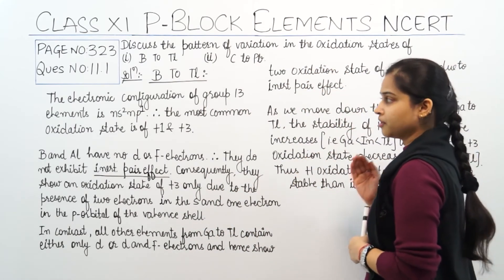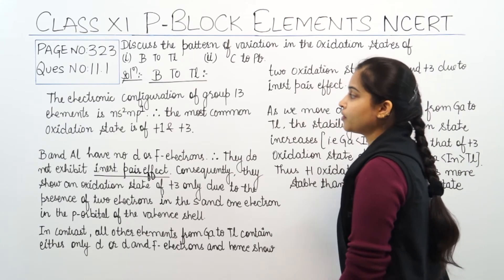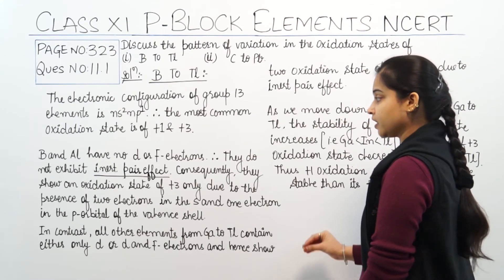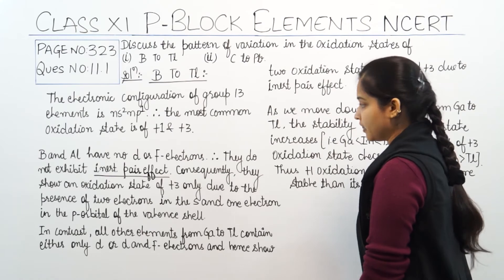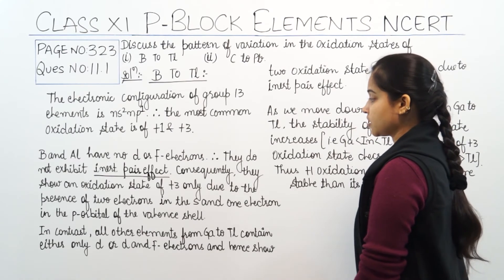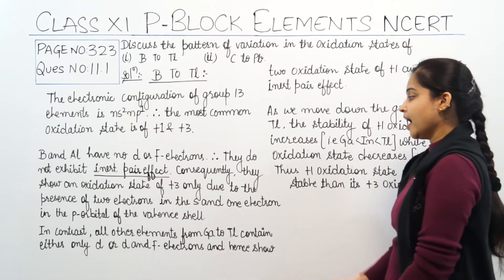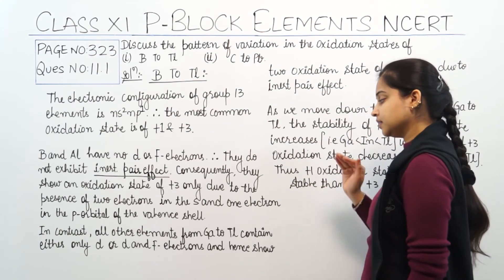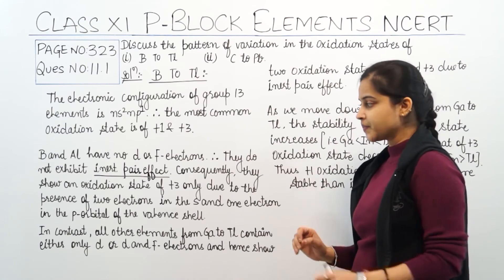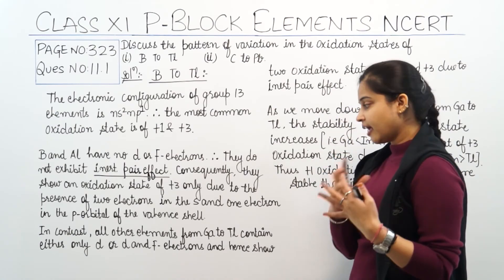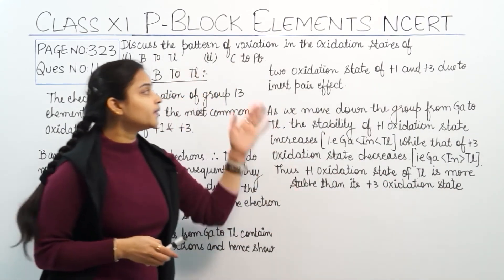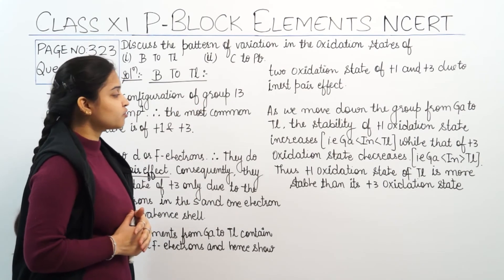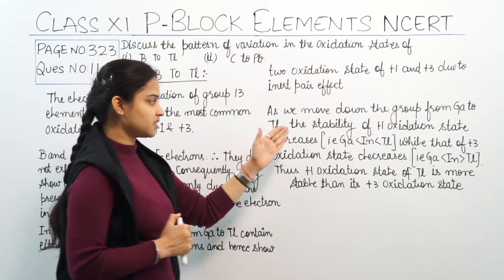The electronic configuration of group 13 elements is ns², np¹. Therefore, the most common oxidation states are +1 and +3. Boron and aluminium do not have D or F electrons; therefore, they do not exhibit the inert pair effect and consequently show an oxidation state of +3 only. In contrast, all the other elements from gallium to thallium contain either D or D and F electrons, and hence show two oxidation states — +1 and +3 — due to the inert pair effect. As we move down the group from gallium to thallium, the stability of the +1 oxidation state increases.